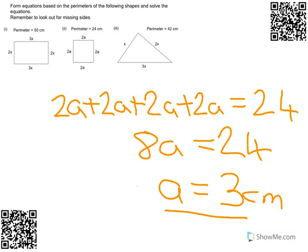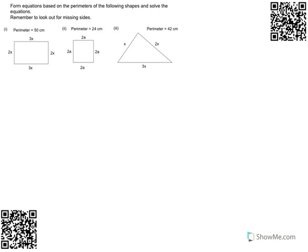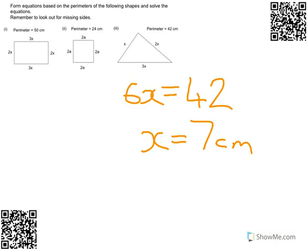Have a go at the third question and I'll give you the answer in a couple of seconds. So press pause. For the third question, hopefully you've got this: x equals 7cm. You've got 7x in total and it equals 42.